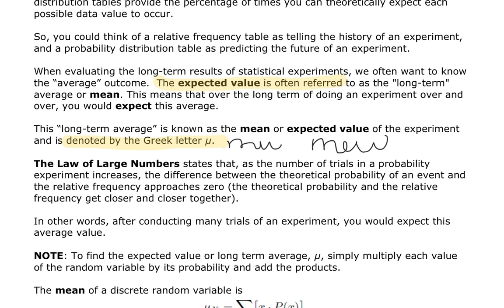The law of large numbers says that if the number of trials in an experiment increases, then the difference between the predicted or theoretical probability of an event happening and the relative frequency — the frequency in which we observed it happening — get closer and closer together until they're almost the same thing. So we can conduct many, many trials of an experiment, and we would expect the outcome to be the average value we would predict to happen.